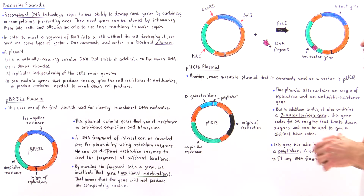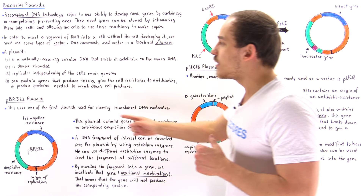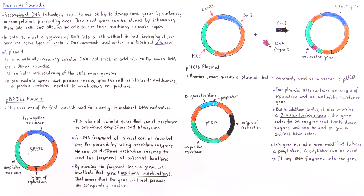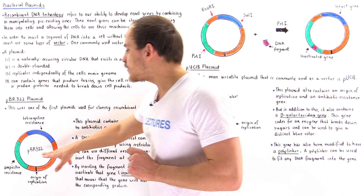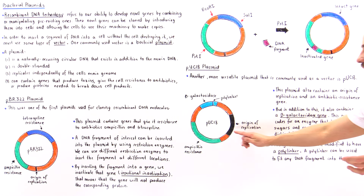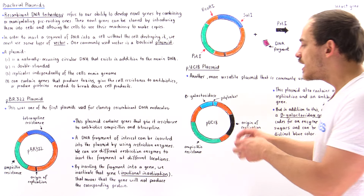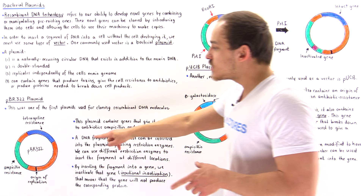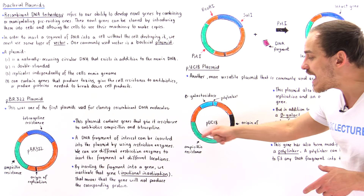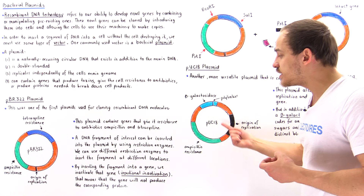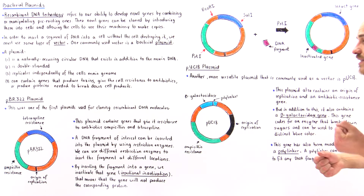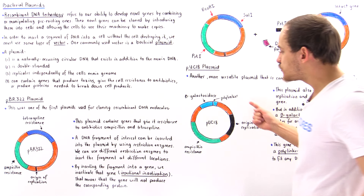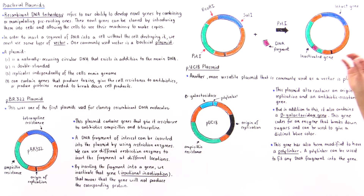Now let's move on to the second type of plasmid, PUC18, which is more commonly used because it is more versatile. Like PBR322, PUC18 also contains an origin of replication so DNA polymerase knows exactly where to begin replication. It also contains the ampicillin resistance gene, which can be used as a marker to differentiate between cells that took up the plasmid and those that did not. In addition, this plasmid also contains a beta-galactosidase gene.